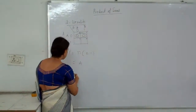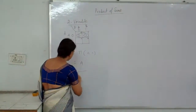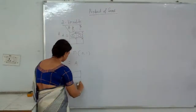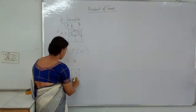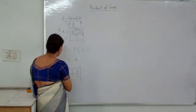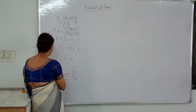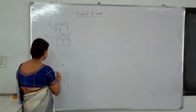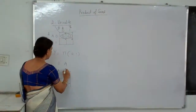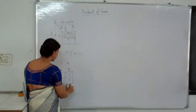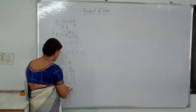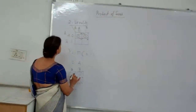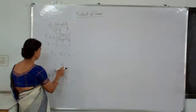Let me take one more example. In this 2-power group, this is A, this is A-bar, this is B, and this is B-bar. So what is your Y equal to? Y equals B-bar.